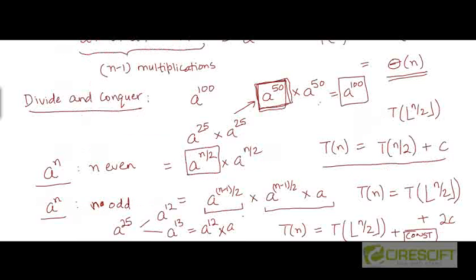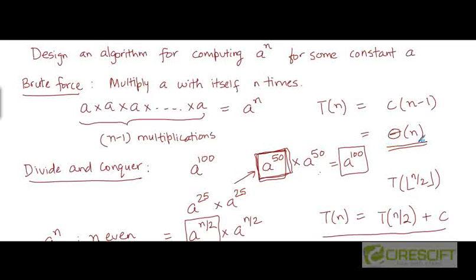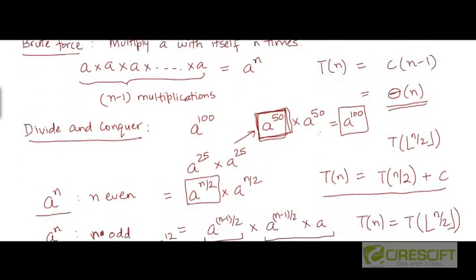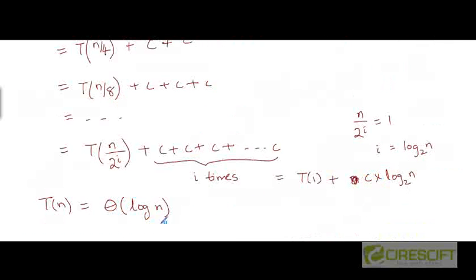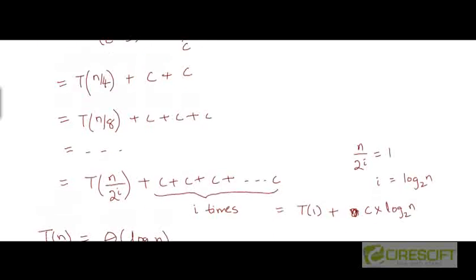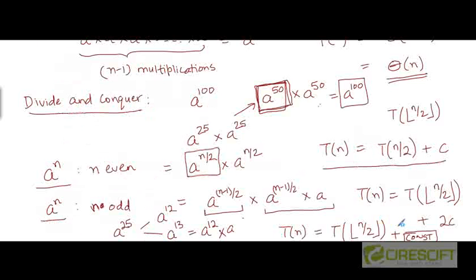This is significantly better than the brute force algorithm, which took Θ(n) linear time. This divide and conquer algorithm runs in time proportional to log n. We could also solve the recurrence T(n) = T(n/2) + c using the master method: a equals 1, b equals 2, n to the power log base b of a equals n to the power 0, which is 1. This has the same rate of growth as f(n), which is also a constant, so by case 2 of the master theorem, T(n) is Θ(log n).